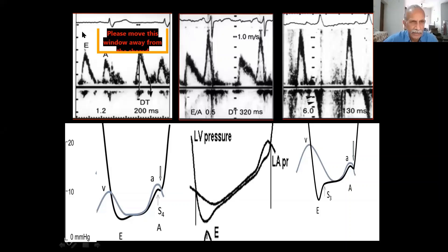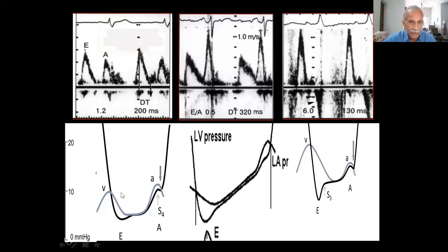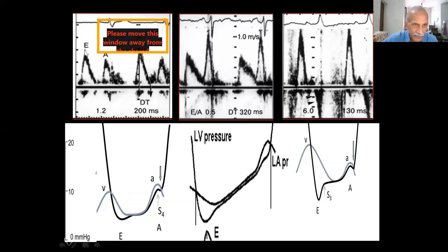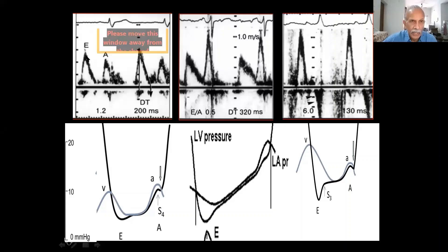Normal E-wave velocity can be anywhere from 0.8 to 1.2, or even 1.5 in a very young person. In older adults, as relaxation decreases, E-velocity is lower and deceleration time is prolonged. More blood is left in the atrium and the A-wave is taller. We use the E-wave deceleration time and E/A ratio to characterize normal versus abnormal filling — and even within abnormal filling, whether it is mildly or drastically abnormal.